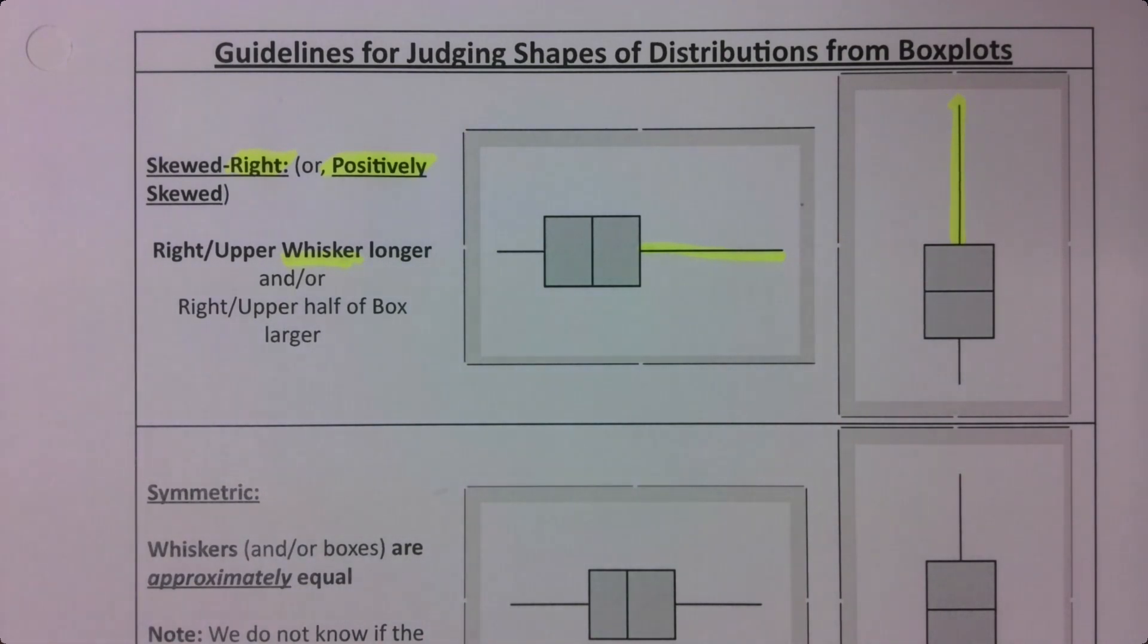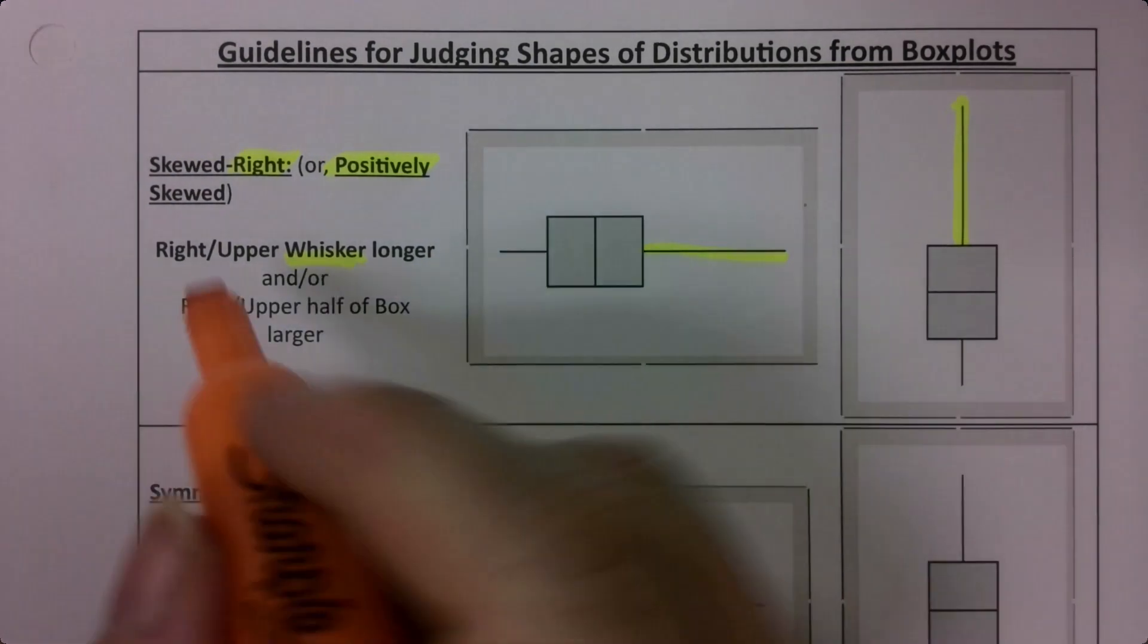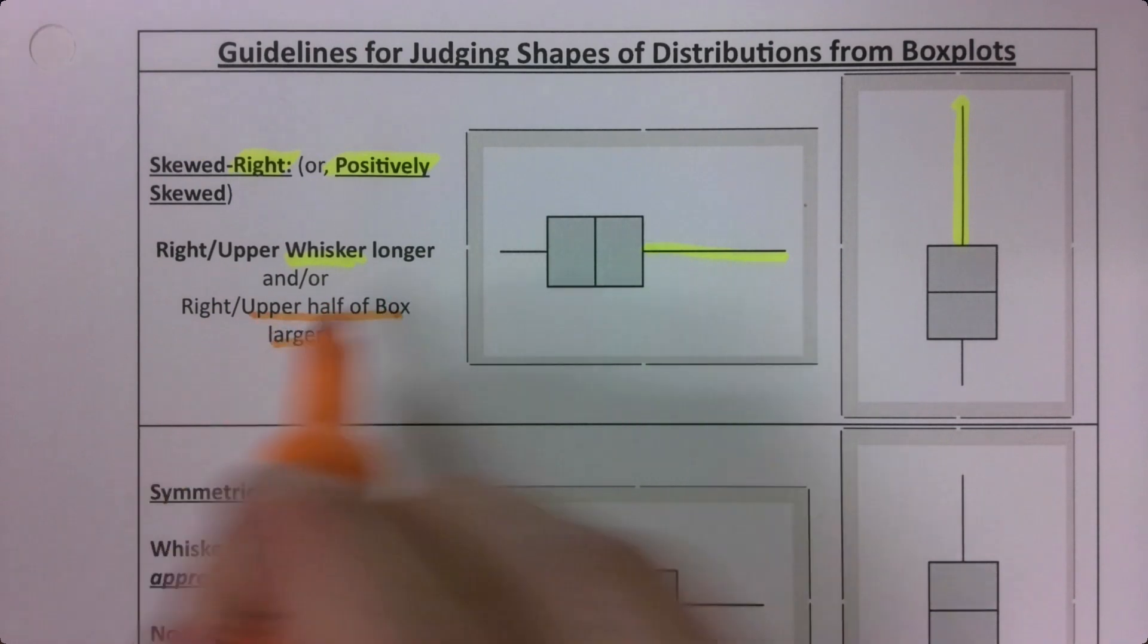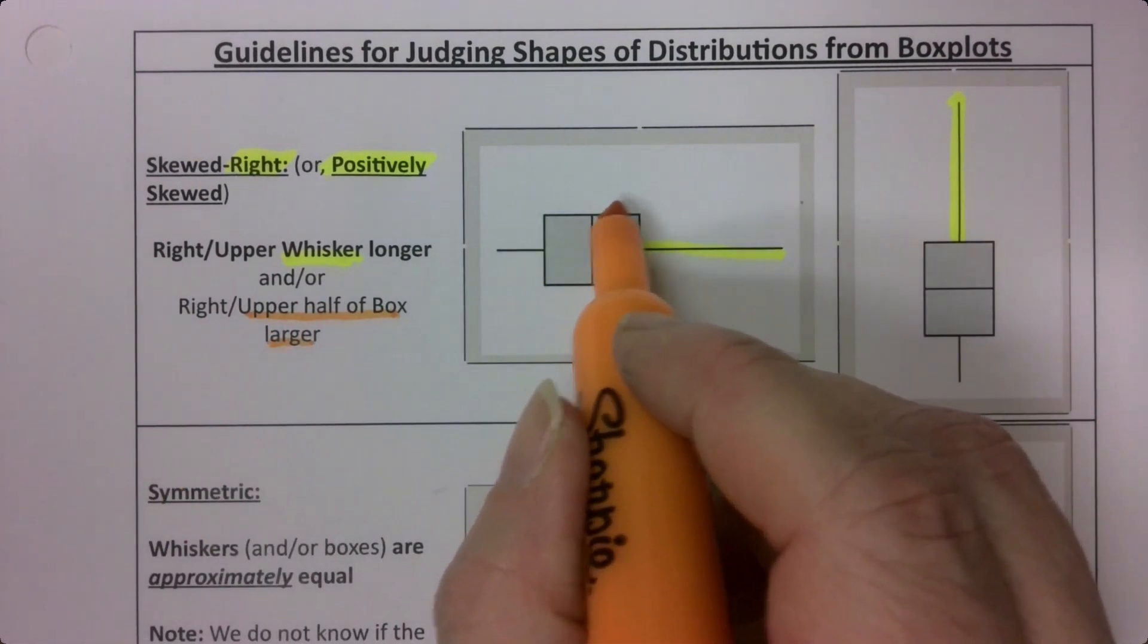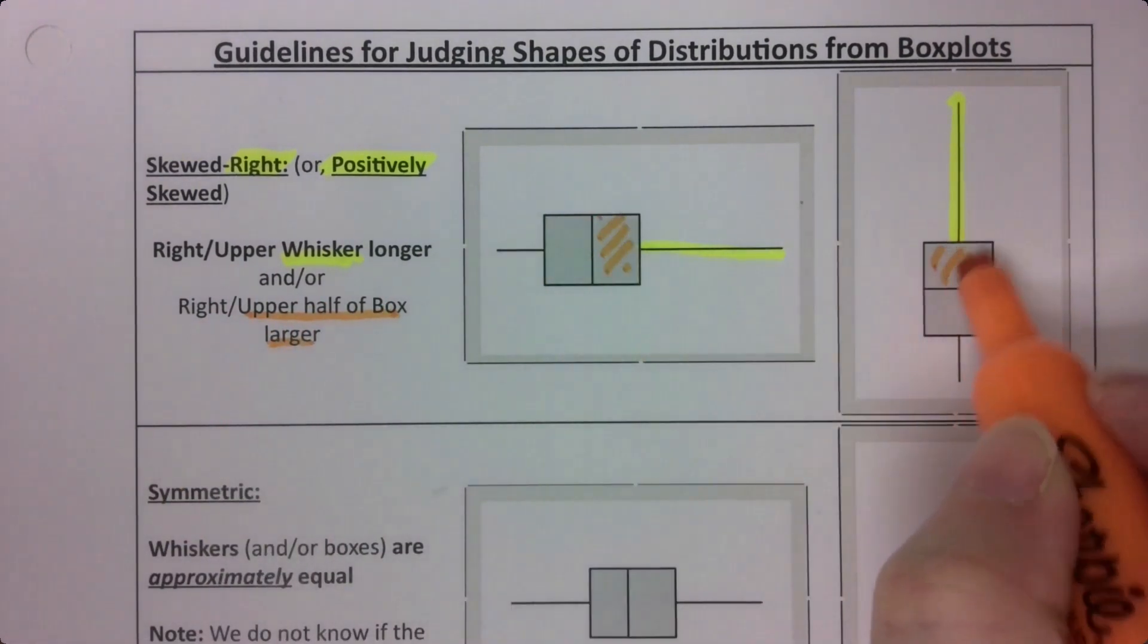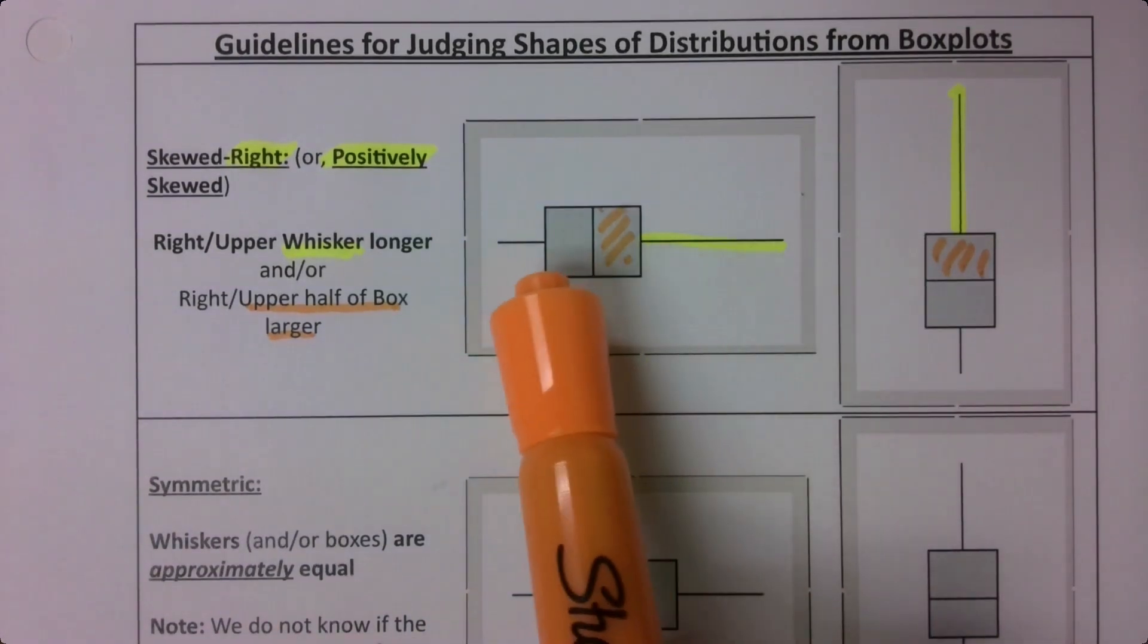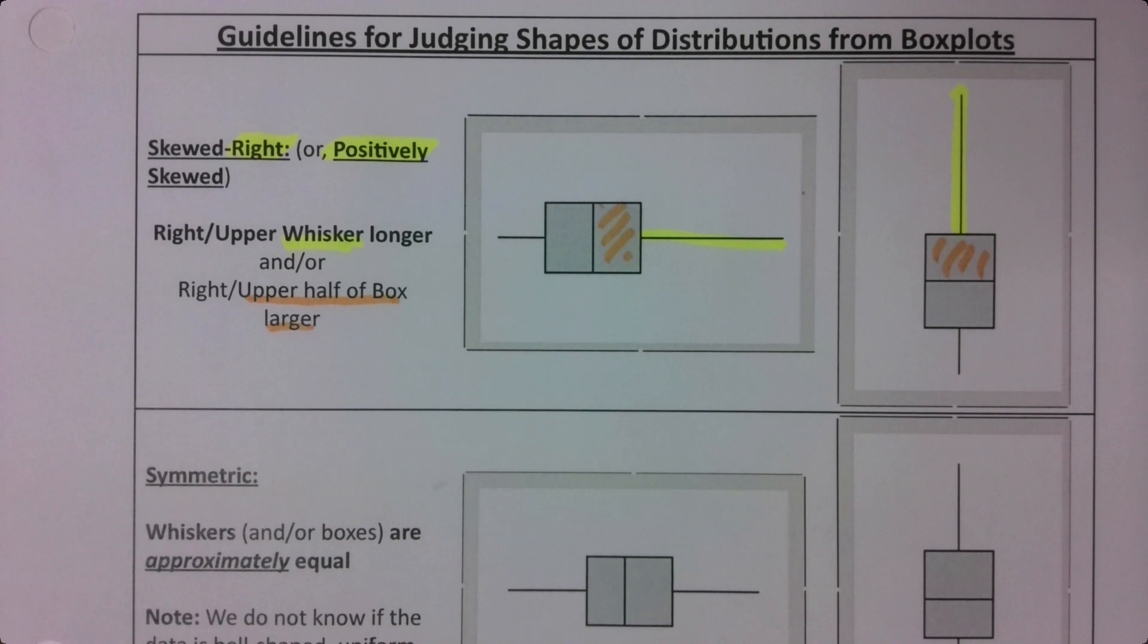But sometimes the box also is larger. It's not the case in this example, but it could be. So the upper half of the box would be over here. So this is the upper half or this one. So you would look to those values. If that upper half of the box is bigger than the lower half of the box, it could be a sign that it's skewed right.